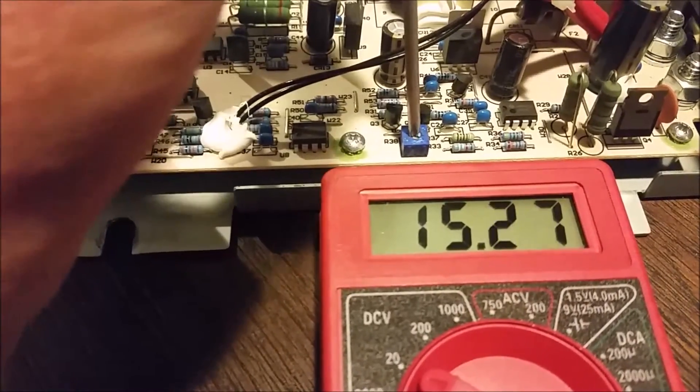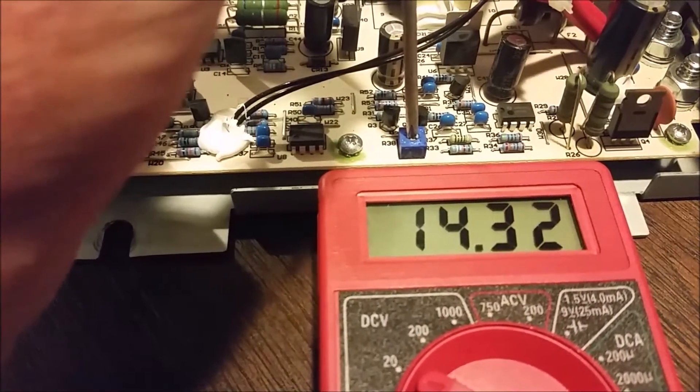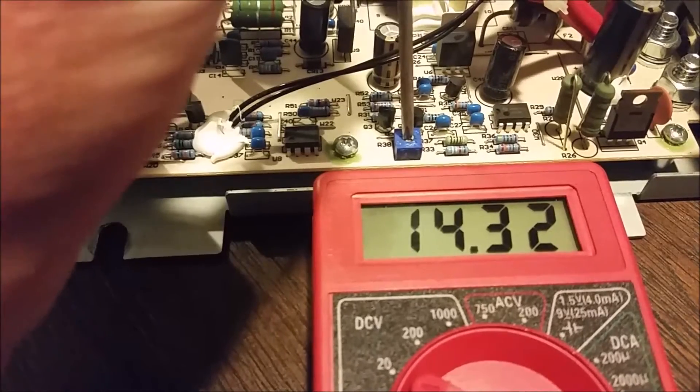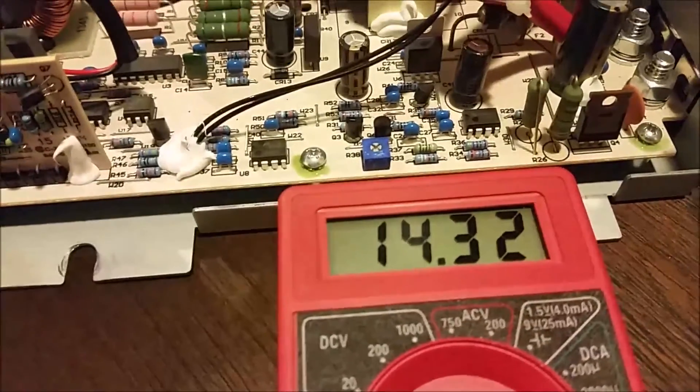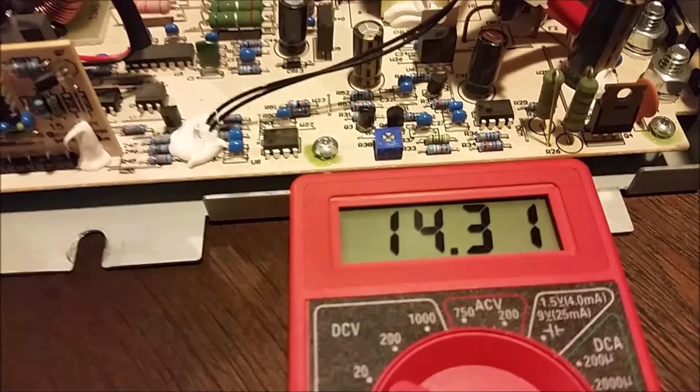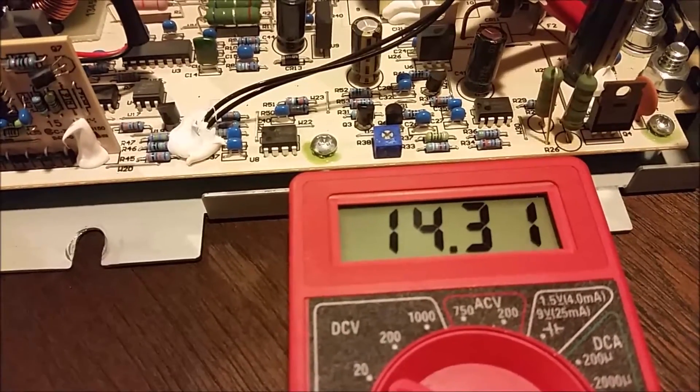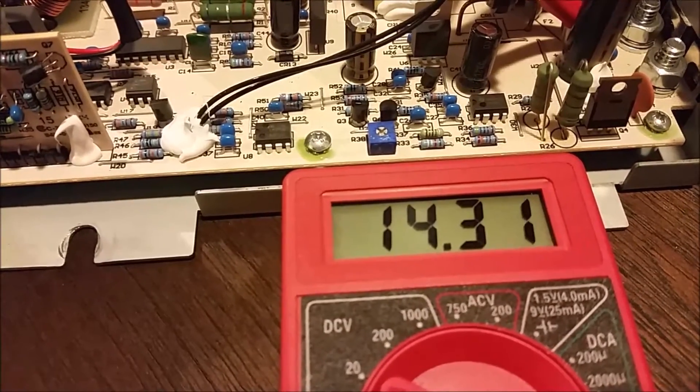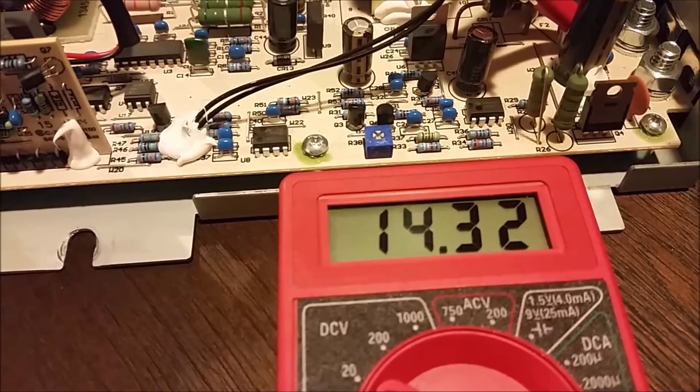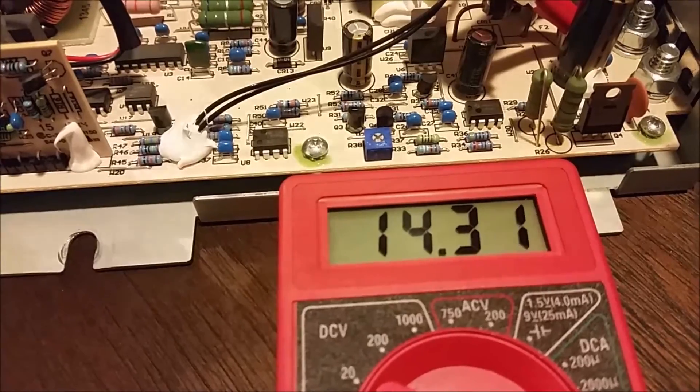Now if we start going clockwise, we take that down to 14.32. Now keep in mind, this is for the first 15 minutes. So I'm going to let the PowerMax do its thing for 15 minutes, and then we will check back and see what the voltage is after it drops down into the second cycle.